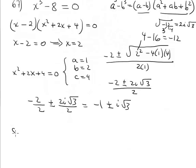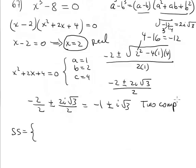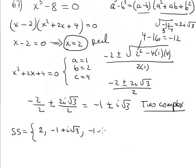Ready to write the solution set. How many solutions do we have in total? We have 3 solutions: 1 real and 2 complex. The complex solutions always come in a pair of conjugates. Solution set: {2, -1 + i√3, -1 - i√3}. That's it — thank you.